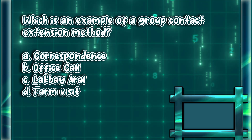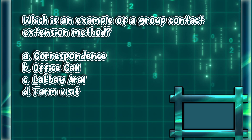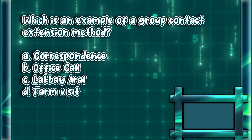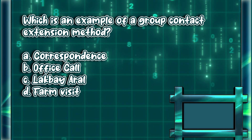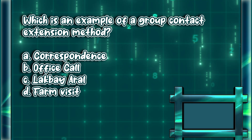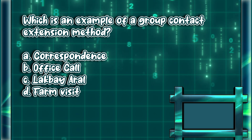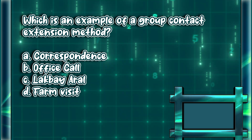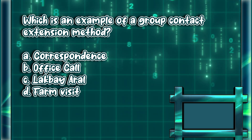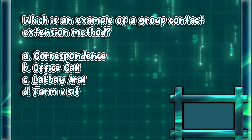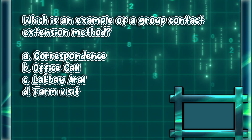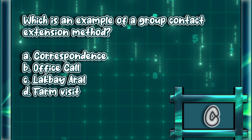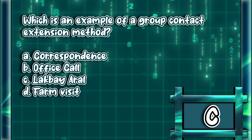Which is an example of a group contact extension method? A. Correspondence. B. Office call. C. Blackboard visual. D. Farm visit. The answer is letter C.